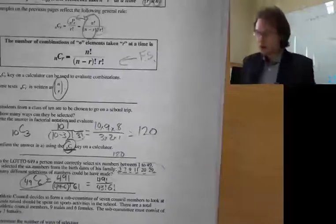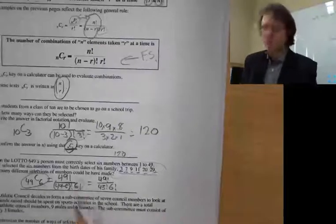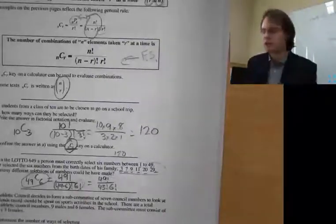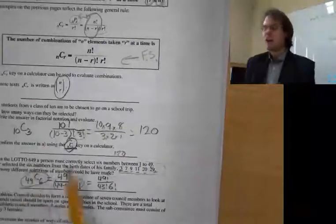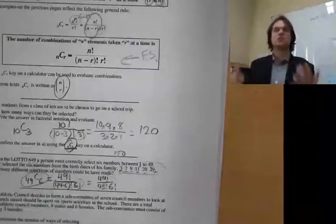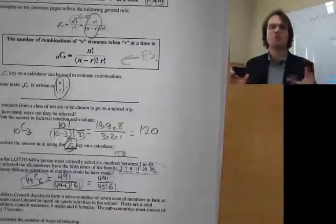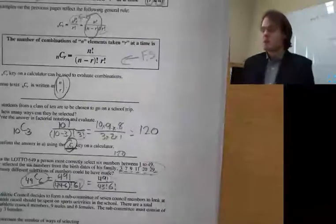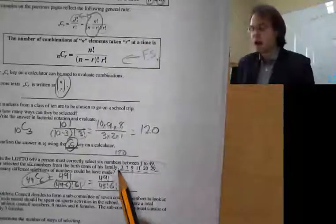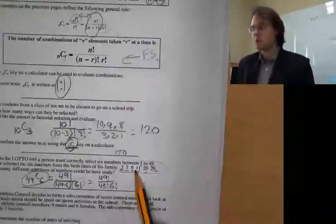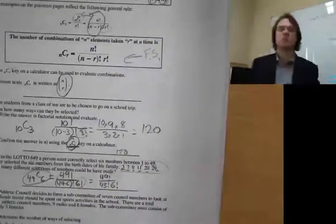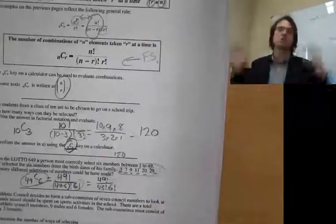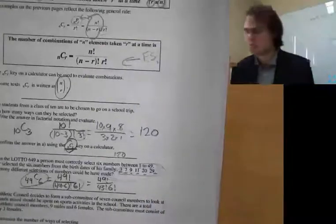We divide by 6 factorial because order doesn't matter. It just says: as long as you have any 6 correct numbers, you win. If the first number drawn was a 9 and then a 3, you still win if you have all the numbers. It doesn't matter the order — you just have to have all the numbers.